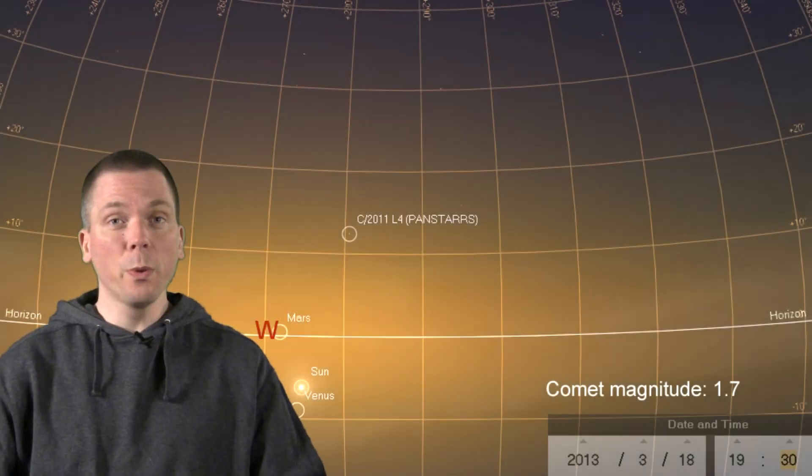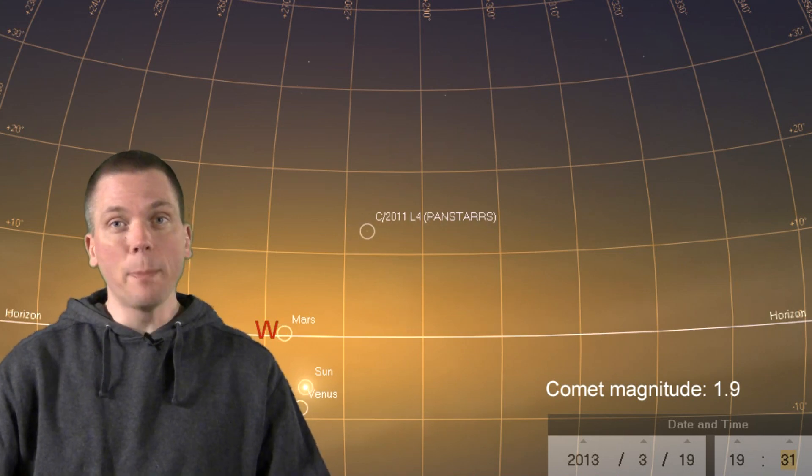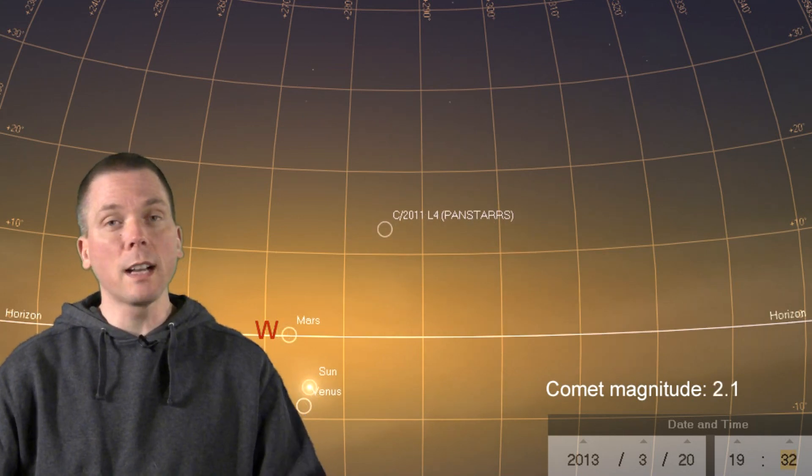The comet moves northward through the latter half of March. Up until this point, we have mostly been viewing the comet at the end of civil twilight, when the sun is about 6 degrees below the horizon.